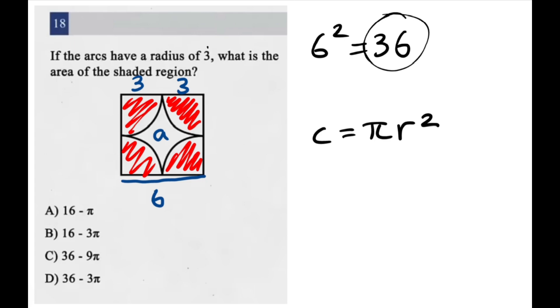And we know from the question that the radius is 3. So we can just put that into the equation and say that the area of the full circle that these quarter circles make up is equal to pi times 3 squared. 3 squared is equal to 9. So this will be the area of all of these quarter circles combined.